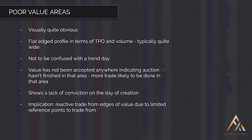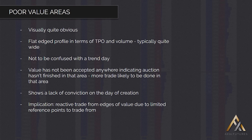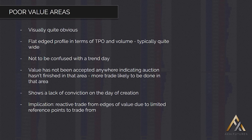The key characteristics of a poor value area is it's very flat-edged in terms of volume and very flat-edged in terms of TPO. What this means is that very limited amounts of time, or a very even amount of time, has been spent at almost every price. This isn't what would indicate a good auction. In a good auction, you will find a price at which buyers and sellers are both happy to interact.